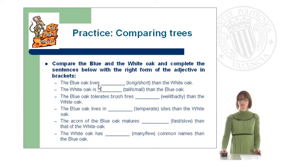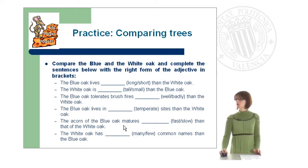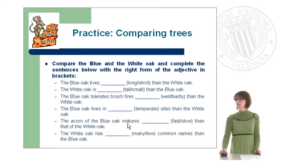The blue oak leaves are [long/short] than the white oak. The white oak is [tall/small] than the blue oak. The blue oak tolerates grass fires [well/badly] than the white oak. The blue oak lives in more temperate sites than the white oak. The acorn of the blue oak matures [fast/slow] than that of the white oak. The white oak has [many/few] common names than the blue oak.